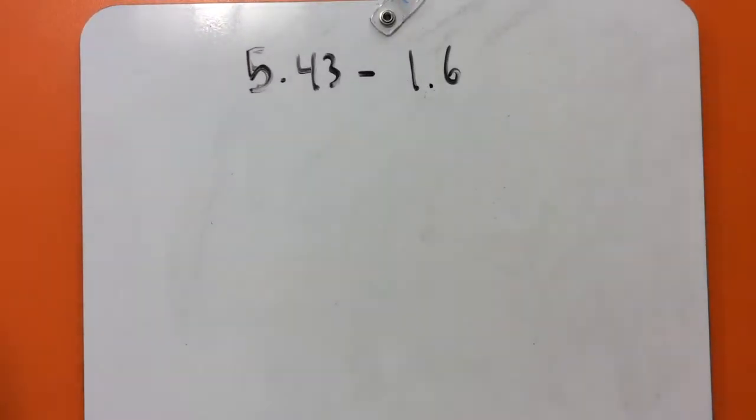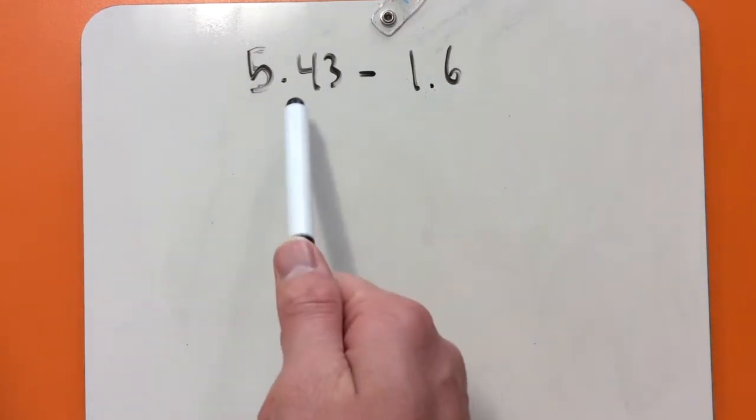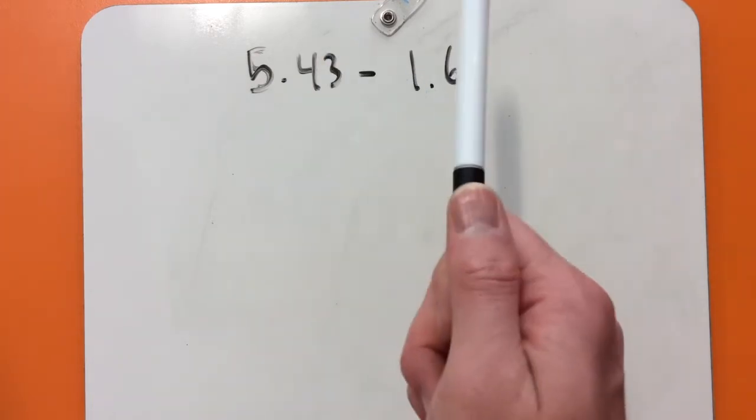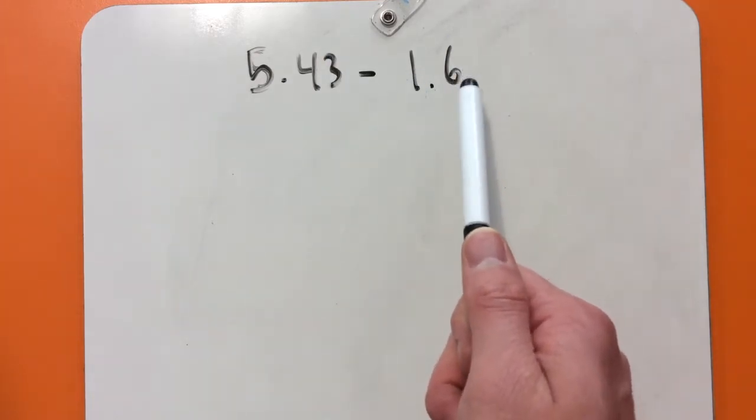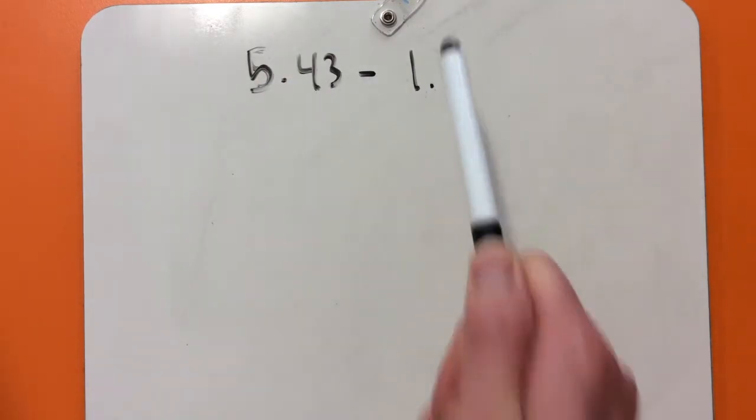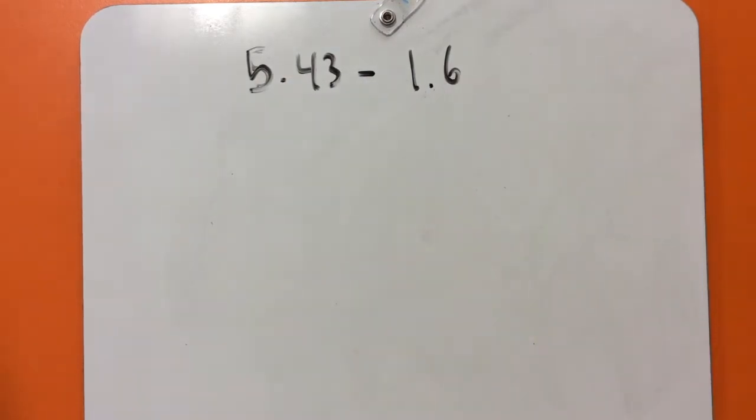To do this problem, there's actually a little bit of a trick. A lot of people would think that it's 5.43, take away 1.6, so 43, take away 6 is 37. That's not the correct answer. It's actually 5 ones, 4 tenths, and 3 hundredths, take away 1, 1, and 6 tenths. So the 6 tenths and the 4 tenths are in the same place, not the hundredths and the tenths.